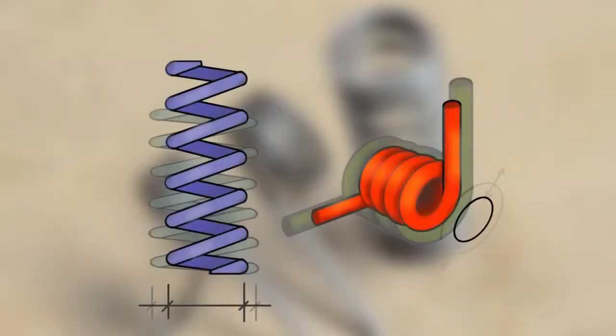Springs change shape as they're loaded and unloaded. For example, a compression spring will expand and a torsion spring might contract. Keep this in mind if you plan to install them in pockets or on arbors.